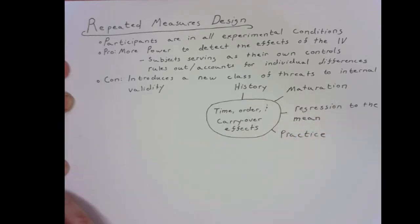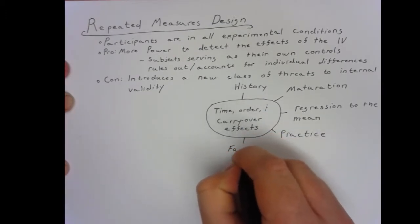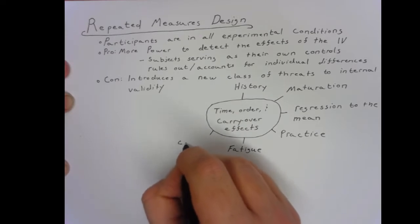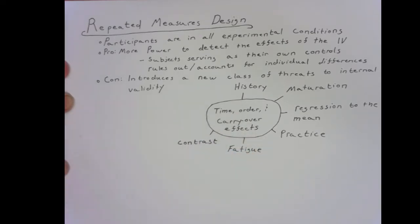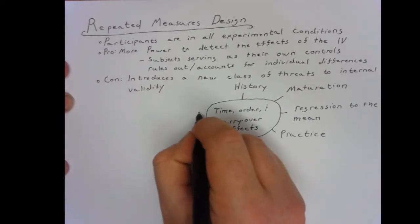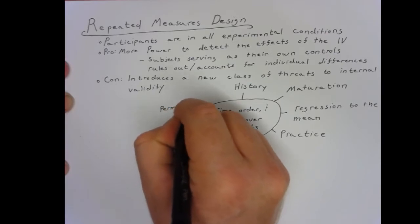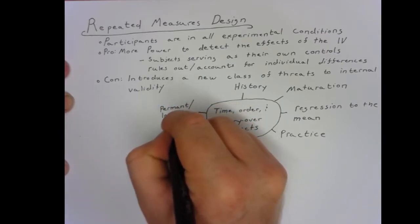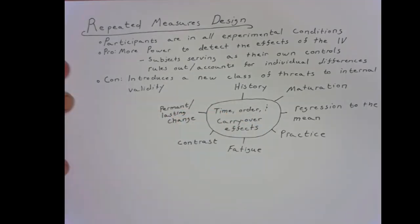It may also be the case that participants just get better at the task with multiple attempts at it, or they could get tired and do worse. They might also recognize that they're in two different conditions and change their behavior based on their own comparison. Additionally, it's possible whatever manipulation you're doing creates a permanent change in your participants, which would entirely mess things up.